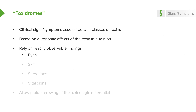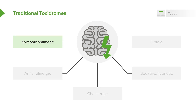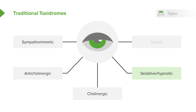The assessment of patients is based on readily observable findings: examination of the eyes or pupils, examination of the skin, secretions, and vital signs. By looking at these four things, we can identify what toxidrome applies to our patient and rapidly narrow the differential diagnosis. The traditional toxidromes include sympathomimetics, anticholinergics, cholinergics, sedative hypnotics, and opioids.